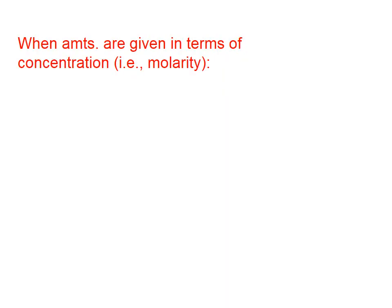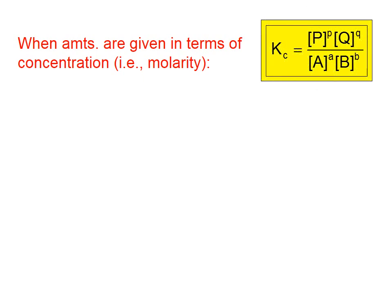When the amounts are given in terms of concentration, i.e. molarity, we write this equilibrium constant. We call it K sub c because it's concentration or molarity. The square brackets mean molarity, so we have molarity of P raised to the power of its coefficient, and so on, products over reactants.